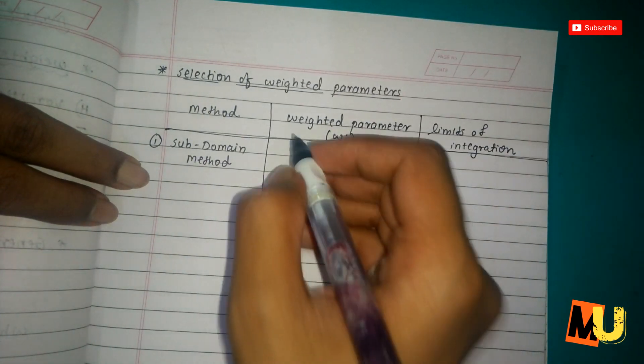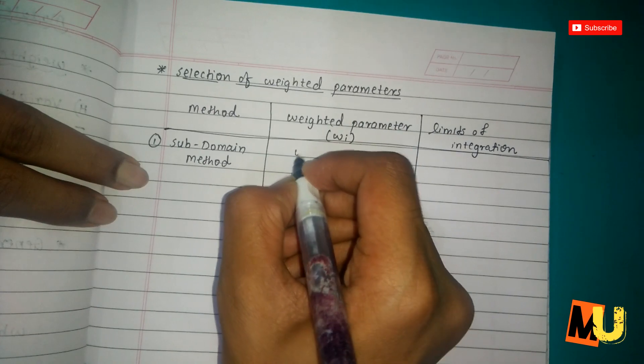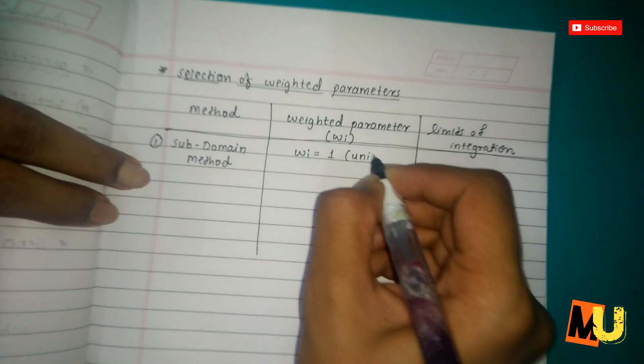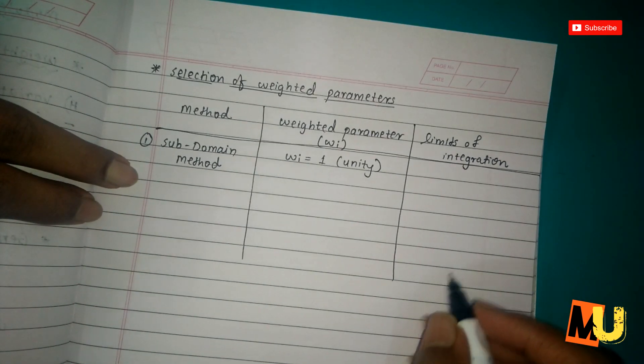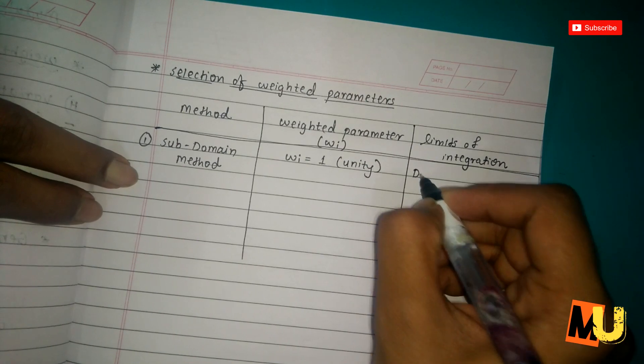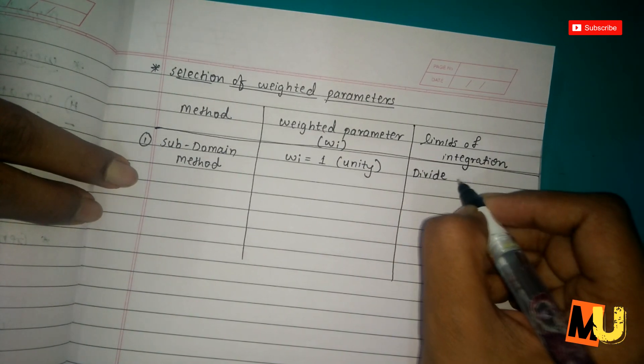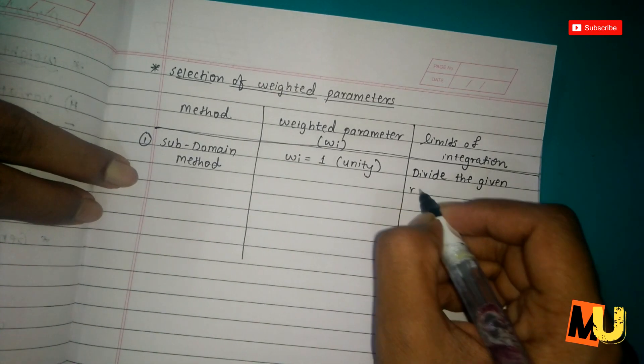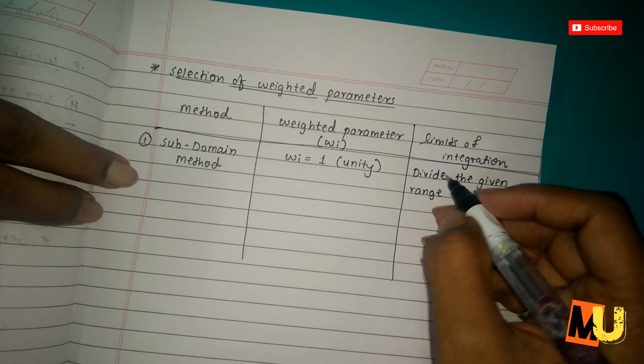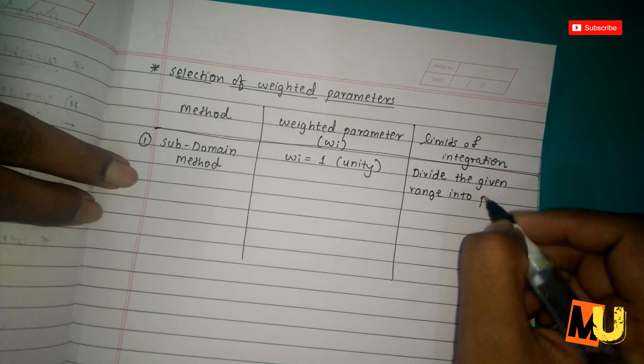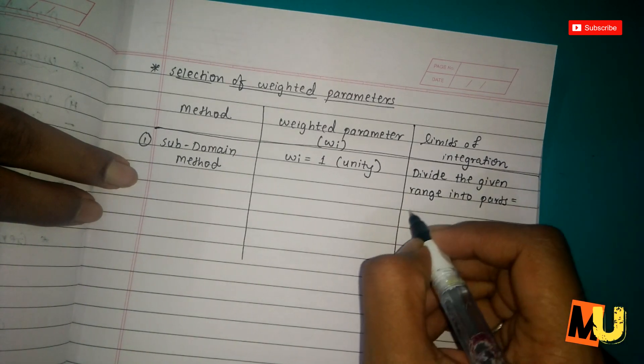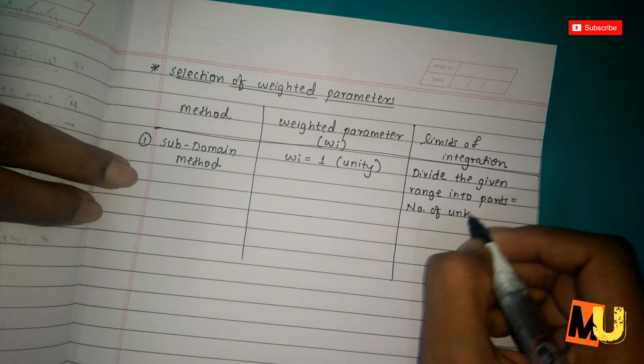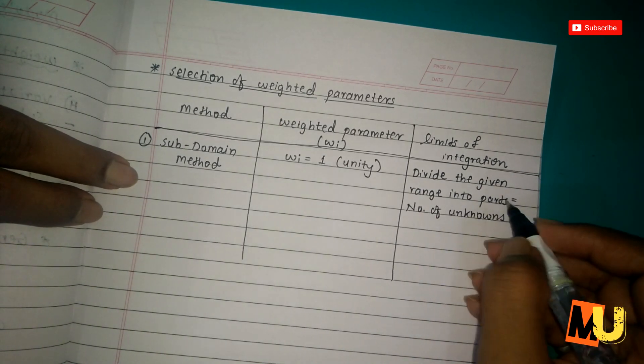The weighted parameter w_i equals 1, that is unity. And the limit is: divide the given range into parts, that is number of unknowns in equation of y.